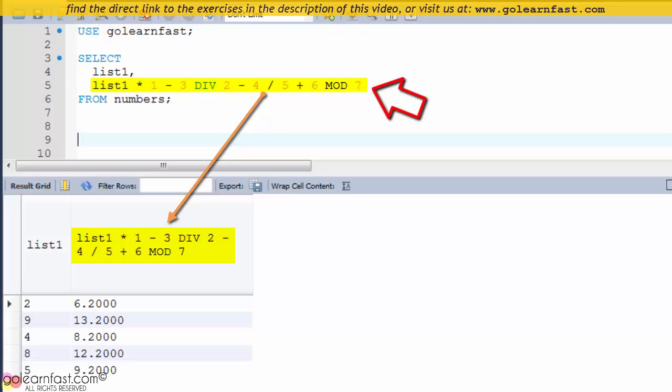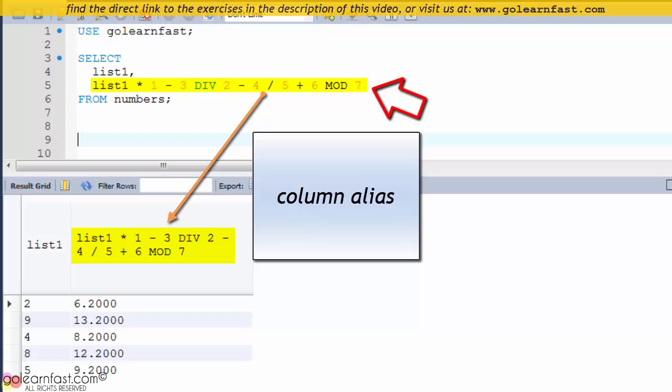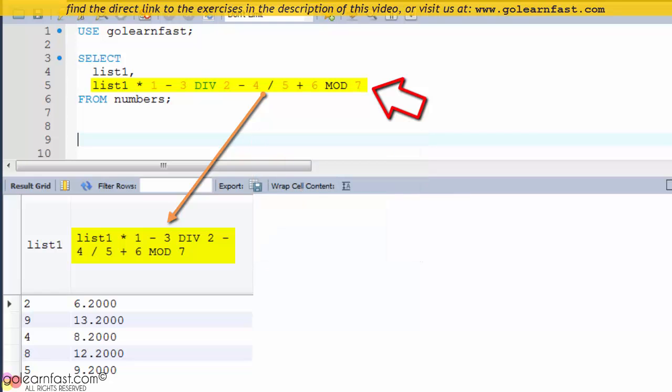Since the expressions for many calculated values can be cumbersome, you can specify a substitute name known as a column alias for the column.